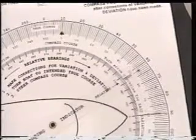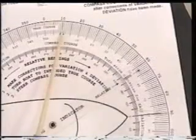After checking the adjustments of variation and deviation once again, read the indicator at the boat's bow to find the number of degrees on the compass course wheel. That is the course to steer.